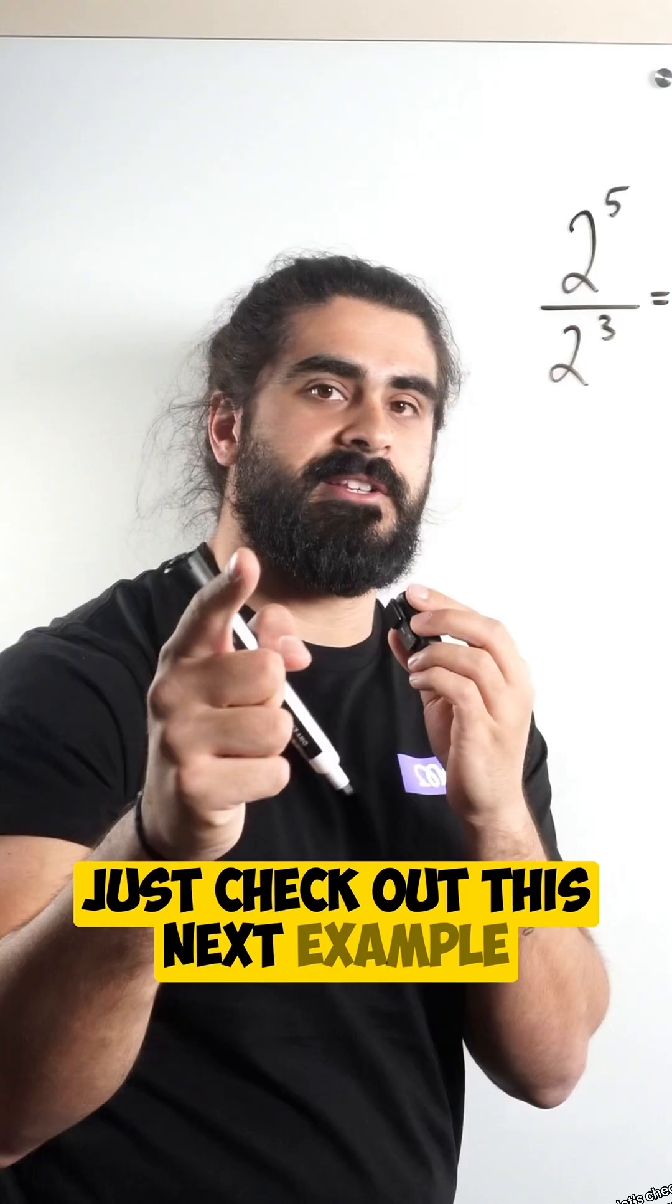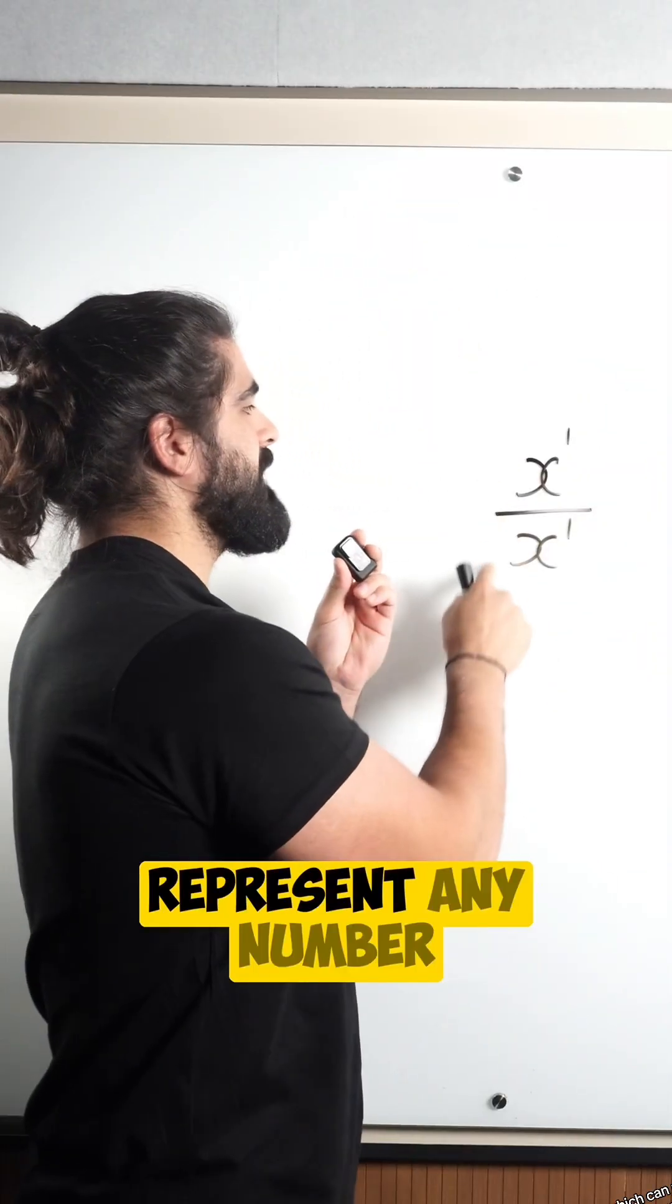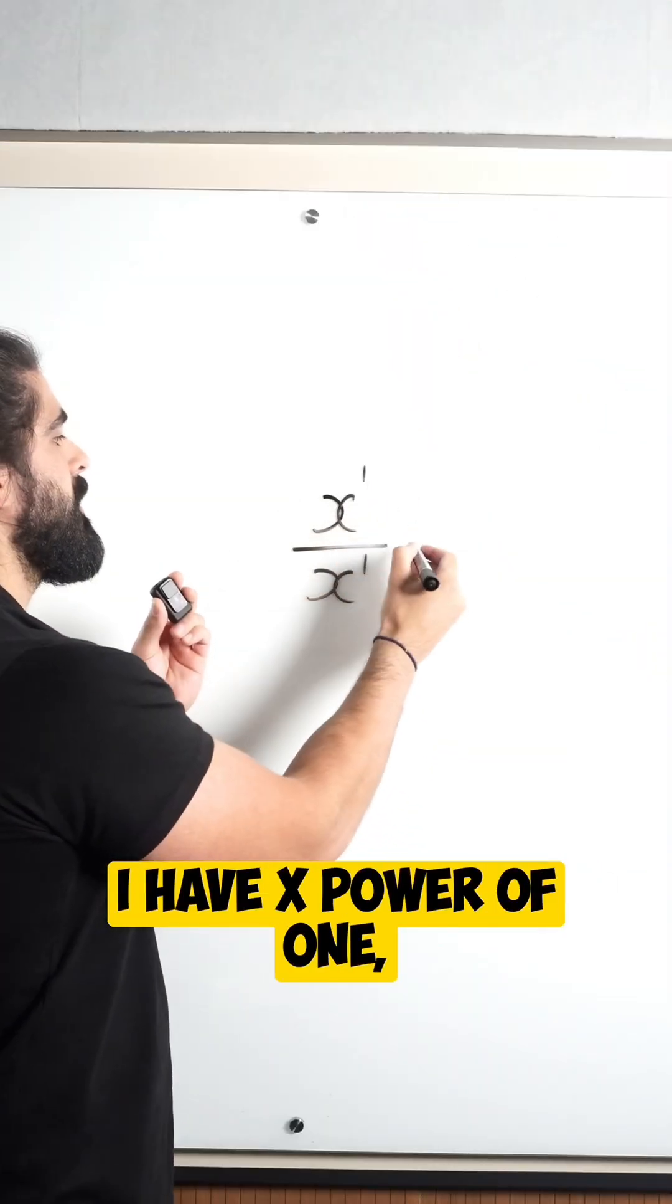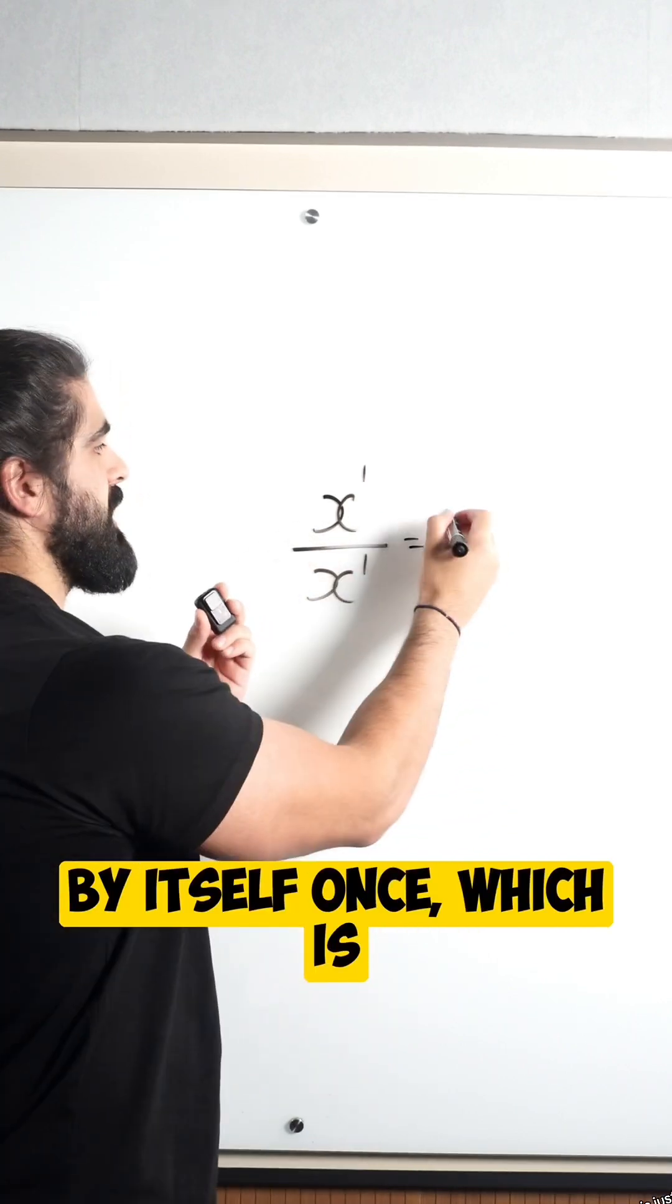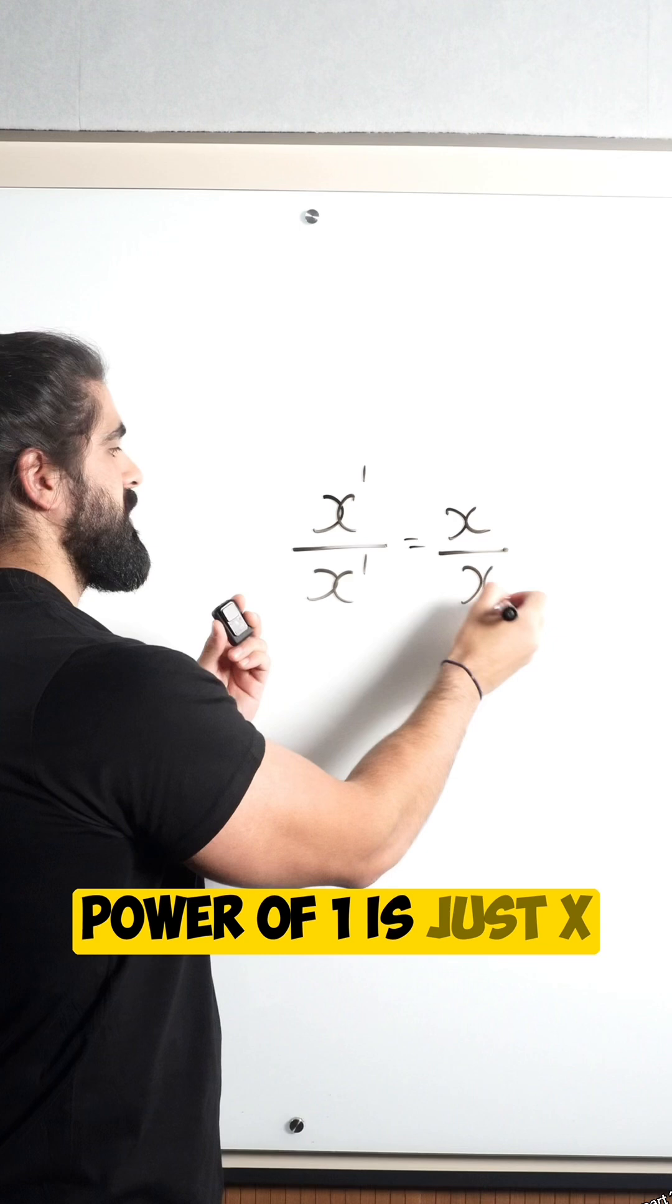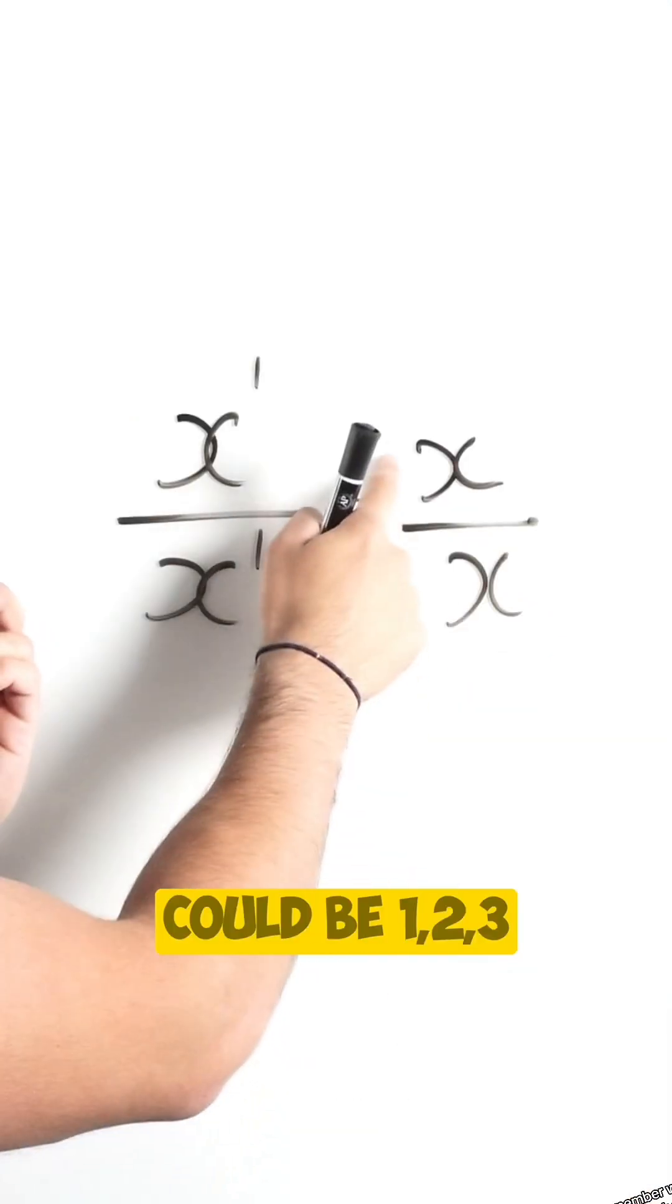So let's check out this next example. Let's take a look at x, which can represent any number. I have x power of one, which means x multiplied by itself once, which is just x, divided by x power of one is just x.